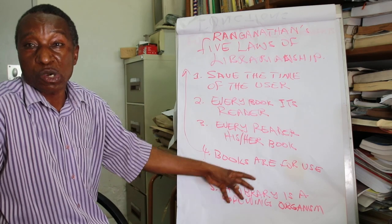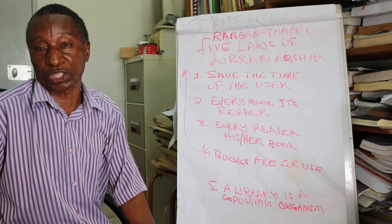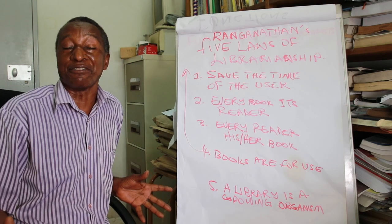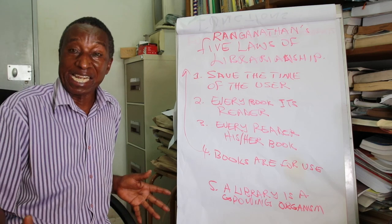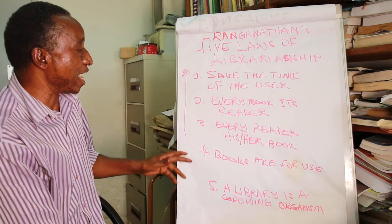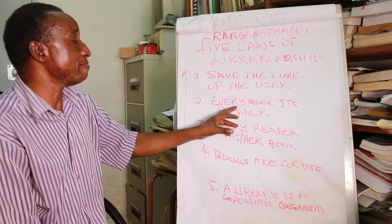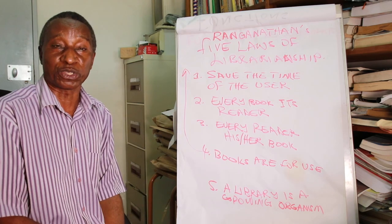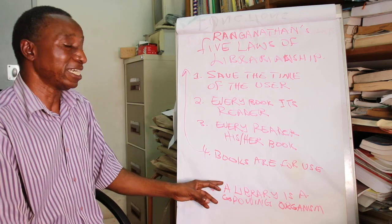We have not put them in the right order, but usually the first law is listed as number four: books are for use. 'Books' here is used as a generic term to mean all information resources we have, whether in electronic format, a book itself, or a CD — these materials we acquire in the library are for use. Then we need to save the time of the user or reader. Every book must have its reader, and every reader their book.